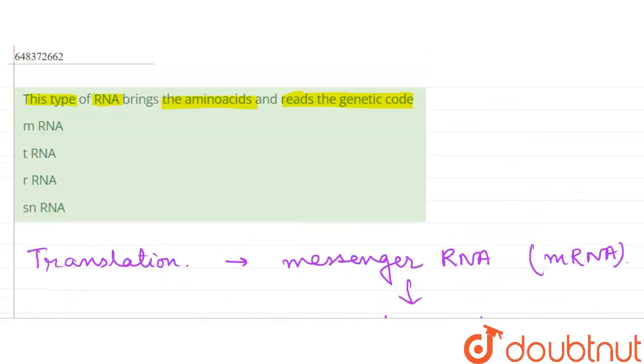So the tRNA is the type of RNA that brings the amino acid and reads the genetic code. So the second option is the correct answer. Rest of the options are incorrect because mRNA, it basically, I have already mentioned that it provides the template.